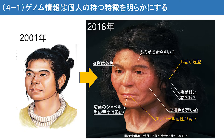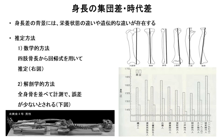縄文人のゲノムを高精度で決定しますと、彼らの見た目の情報も取得することが可能となります。こちらは船泊23号の復顔を行ったものです。この復顔の際にゲノム情報から得られた目の色、肌の色、肌の特徴また髪の質などが反映されています。復顔に反映できなかった特徴としても、歯の形状や耳垢のタイプ、アルコール耐性が強いといった特徴もゲノムから明らかとなっています。また古代人の身長推定には人骨を用いた数学的な方法あるいは解剖学的な方法が用いられてきました。